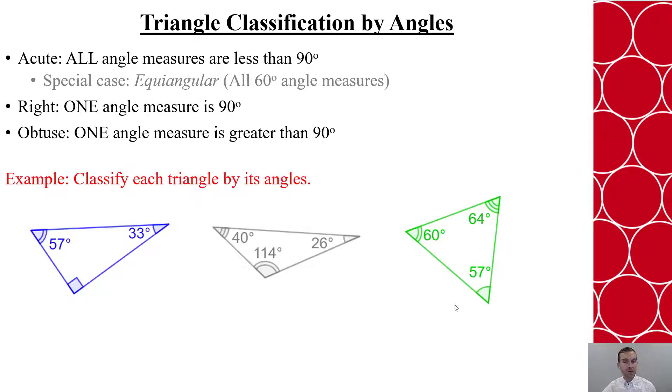So if I have three different triangles here, I want to classify just by angles. The first one, I see the right angle marker, which notifies me that this is a right triangle. Also, if I take 57 and 33, that's 90 degrees, and I know all three have to add up to 180 degrees. So this has to be 90.